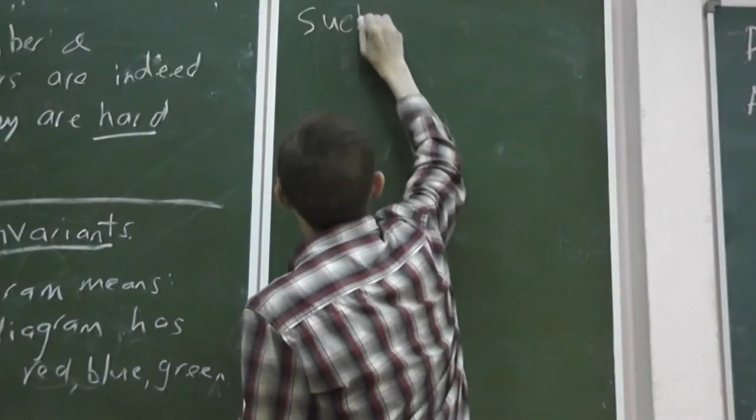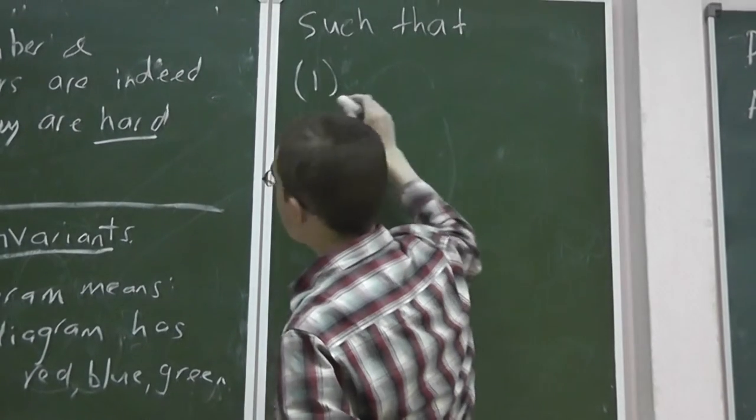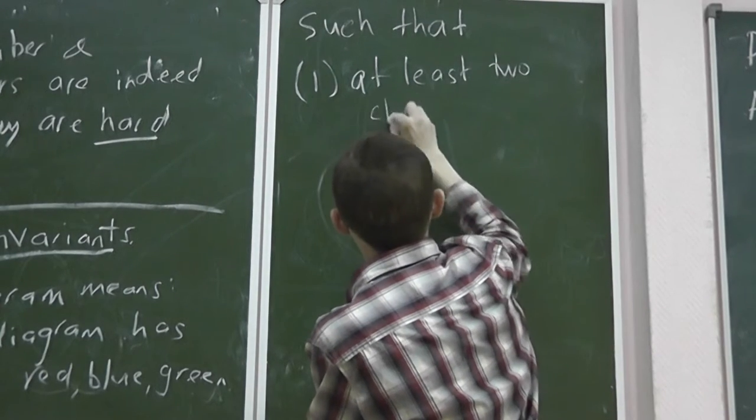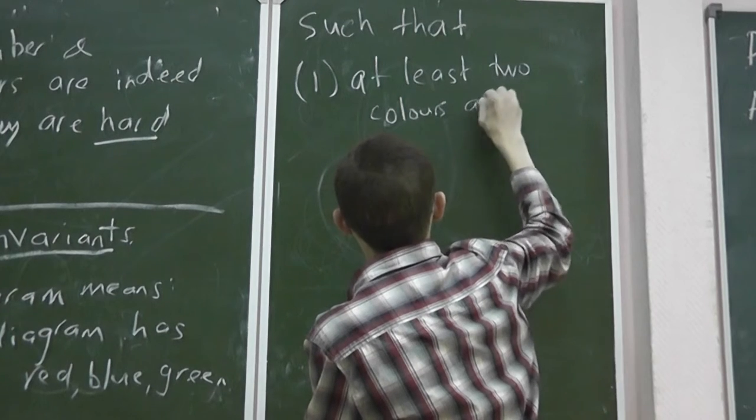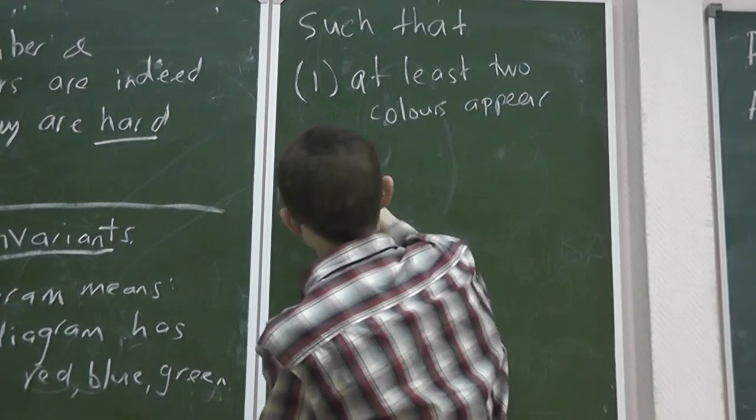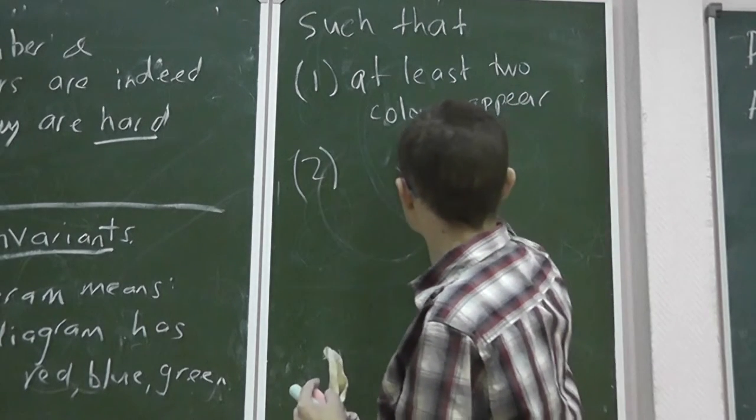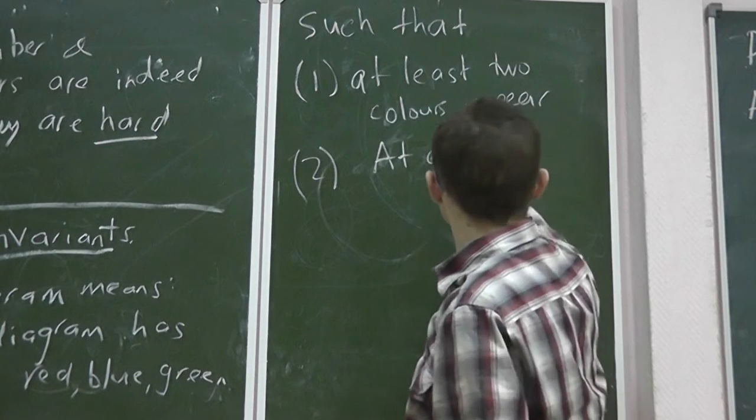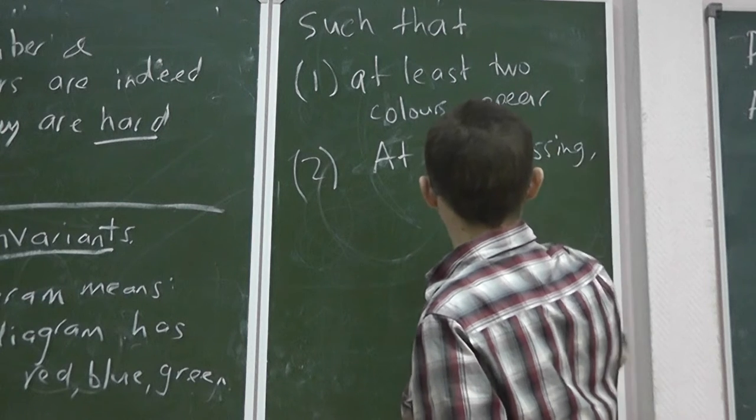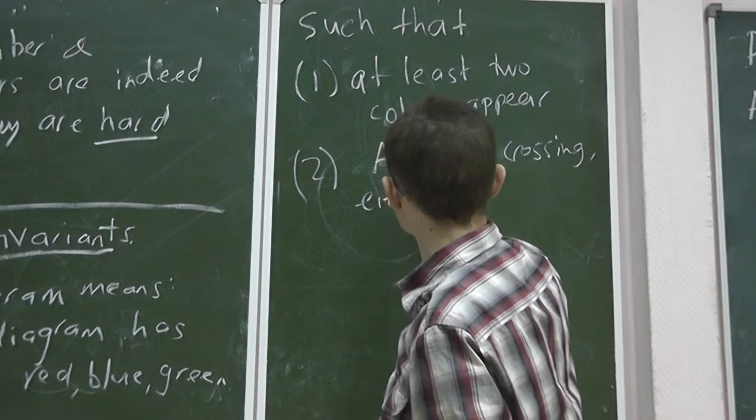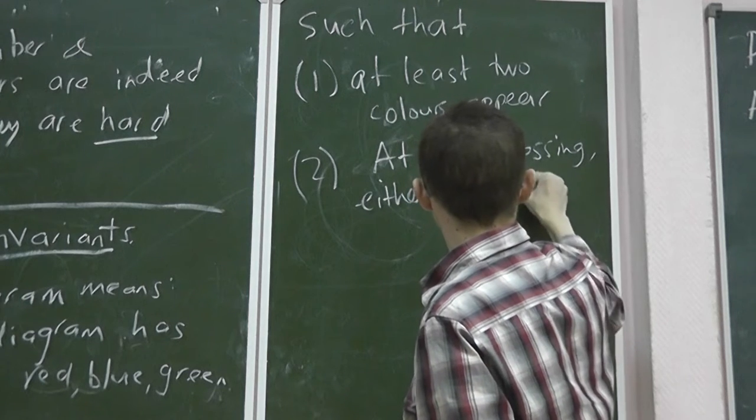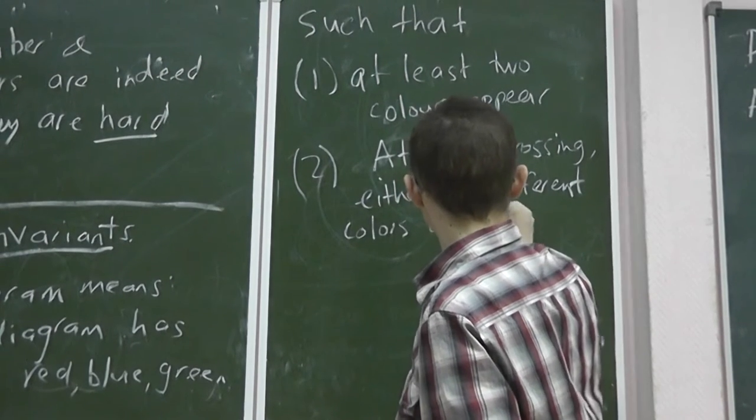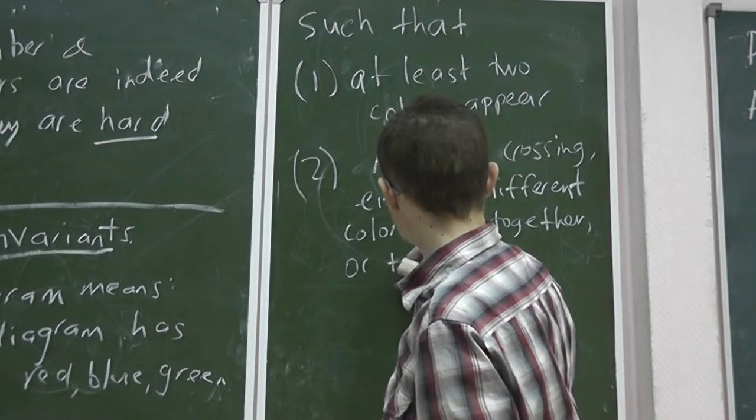One of three colours, such that one, at least two colours appear. And two, whenever two arcs meet at a crossing, either three different colours come together or all the same colour, or only one.